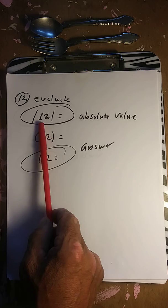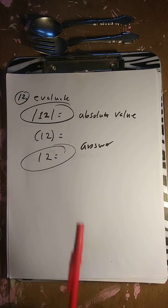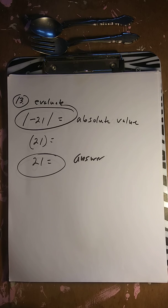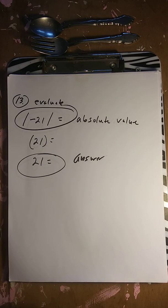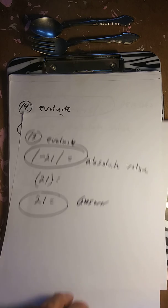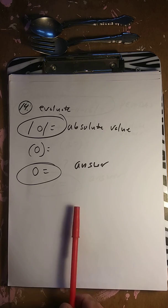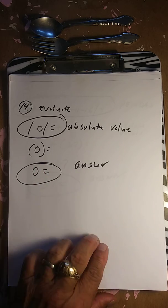Absolute value of 12 is just 12. Absolute value of negative 21 is positive 21. Absolute value of 0 is 0.